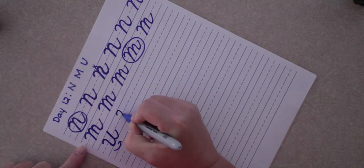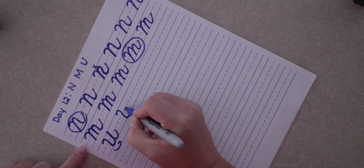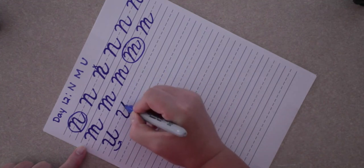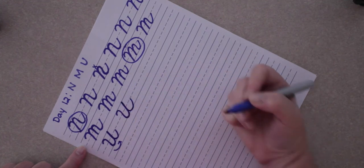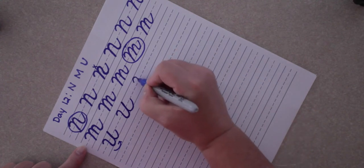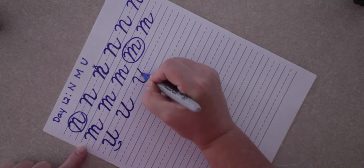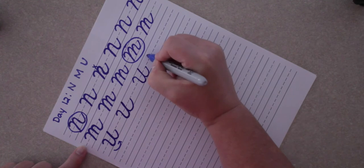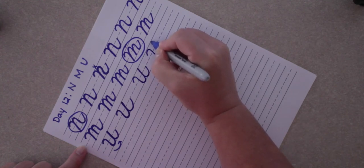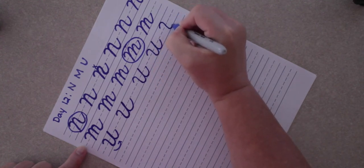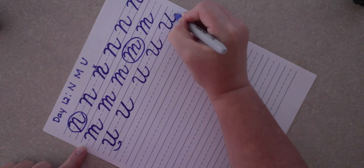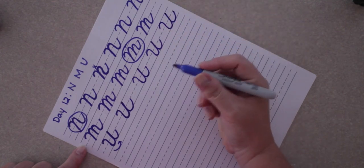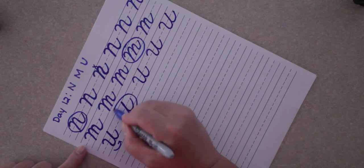So you have the cane shape, then you curve, come up to the top, touch, trace that back down, and put on the tail. When you're ready, you can pause this video and make a line of capital U and then circle the one that you like the best.